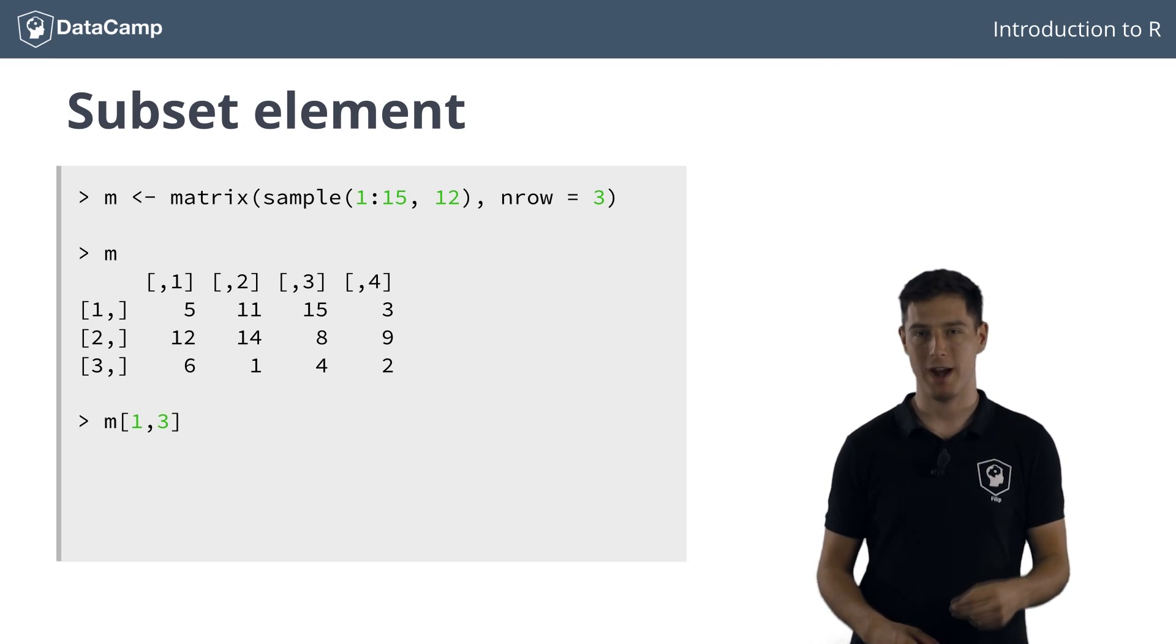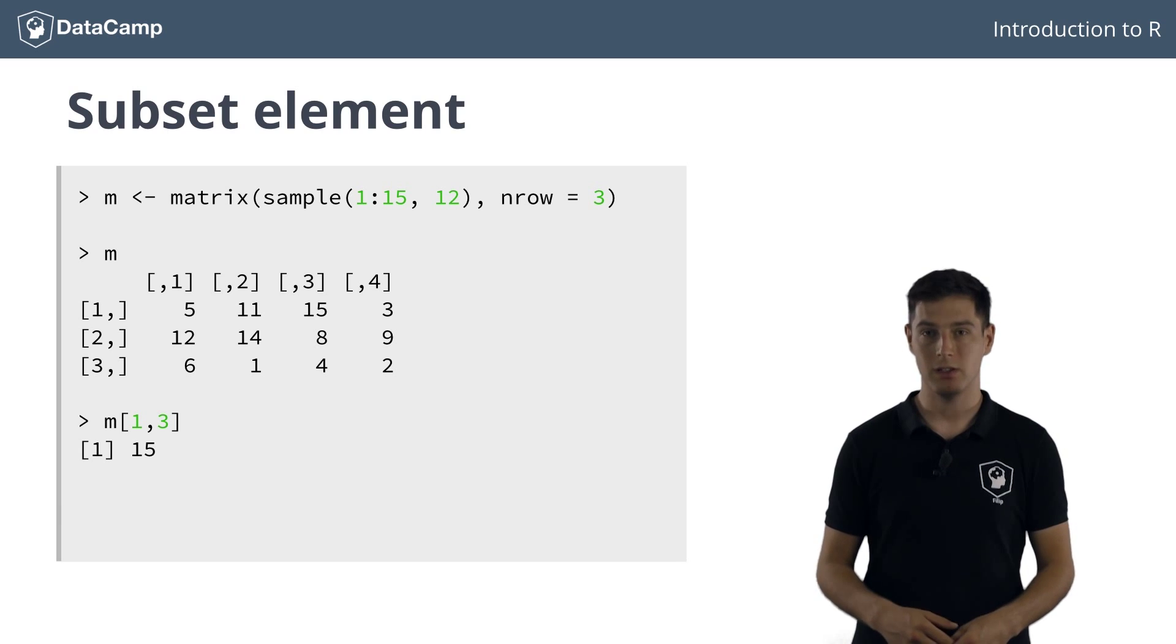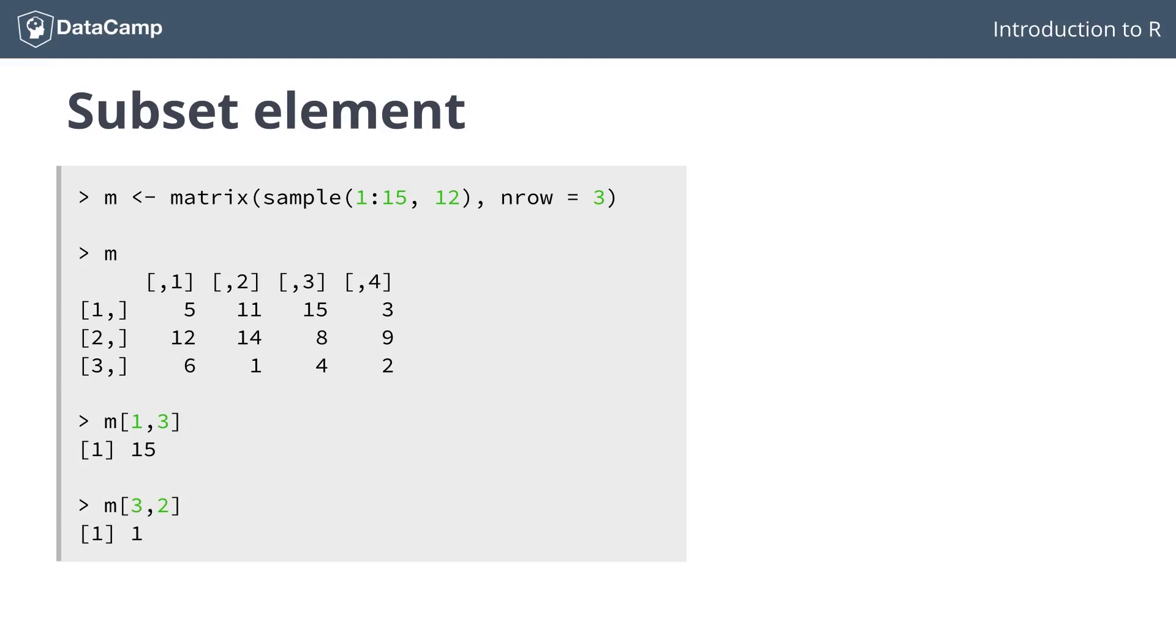As you can probably tell, the first index refers to the row, the second one refers to the column. Likewise, to select the number 1 at row 3 and column 2, we write the following line. Works like a charm. Notice that the results are single values, so actually vectors of length 1.